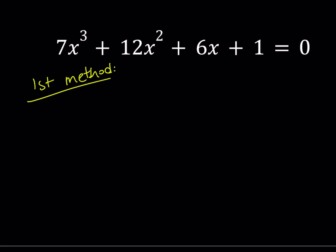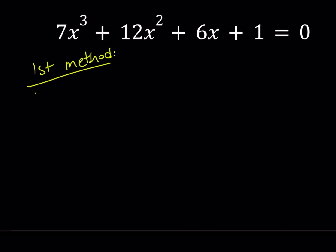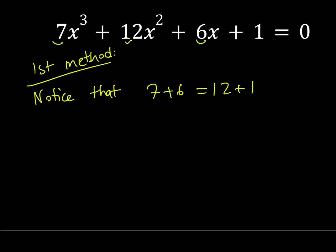I want you to notice something here. Notice that, maybe you already did, 7 plus 6 is equal to 12 plus 1. Well, we already knew that. Yes, but it has an important meaning. 7 plus 6 is equal to 12 plus 1. What is that supposed to tell you in terms of the coefficients of this cubic equation?